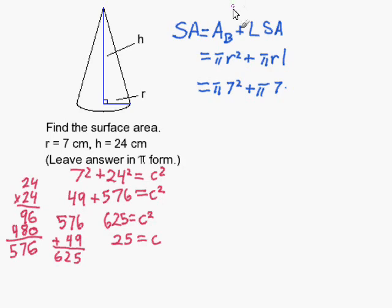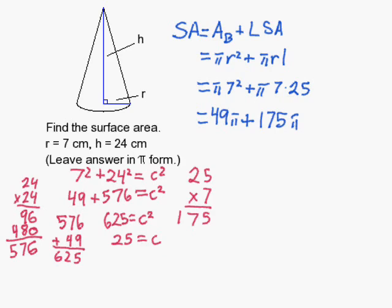So, now we know that our slant height, this length, is 25. Let's substitute it back for our slant height. Put 25 right there. And let's keep going now. So, I get 49π plus, and I don't know 7 times 25, so I'm going to multiply it out. And I get 175. So, now I'm going to substitute 175.